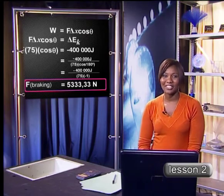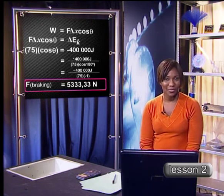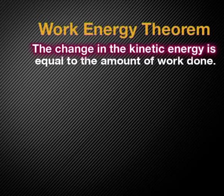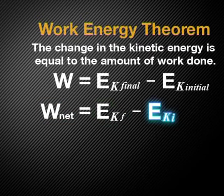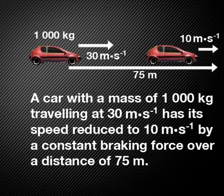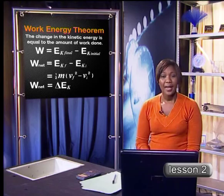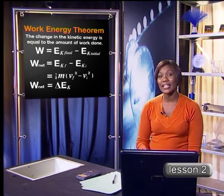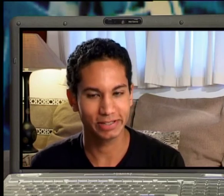Let's recap what we have discovered in this lesson. We have investigated the relationship between work and energy, summarized in the work-energy theorem. This theorem states that the change in kinetic energy is equal to the net amount of work done. Mathematically: net work equals final kinetic energy minus initial kinetic energy, or half of mass times the difference between final velocity squared and initial velocity squared. When the net work done on an object is positive, kinetic energy increases; if negative, kinetic energy decreases; and if zero, kinetic energy — and therefore speed — remains constant.